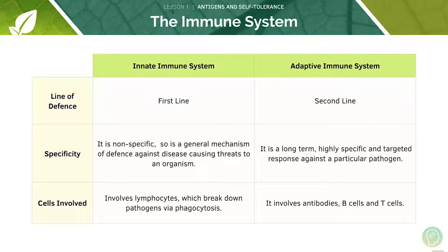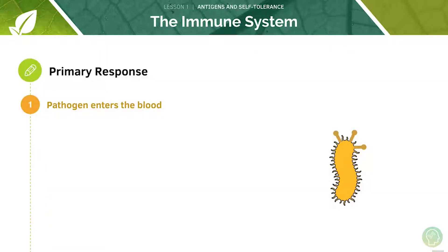The innate system is the primary response and therefore it is non-specific. It involves lymphocytes which use the process of phagocytosis to break down the pathogens. In contrast to this, the adaptive immune system is the second line of defence, which is more long term. This is highly specific and involves antibodies.